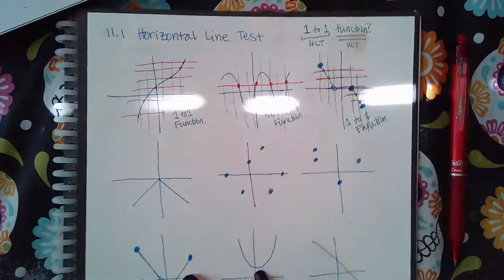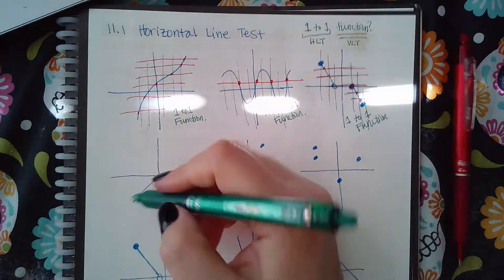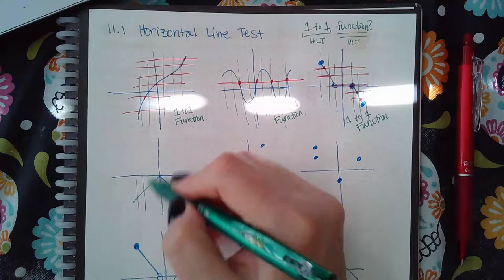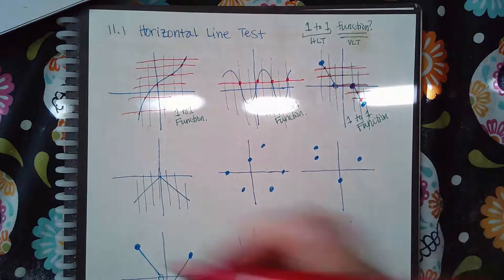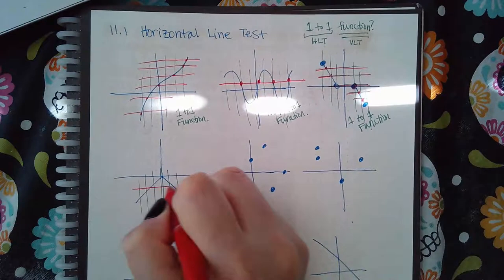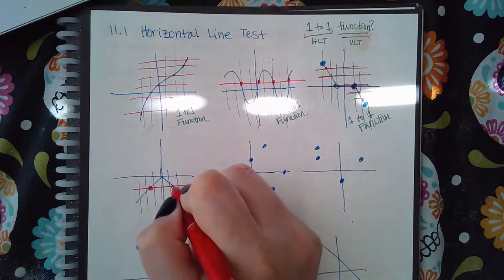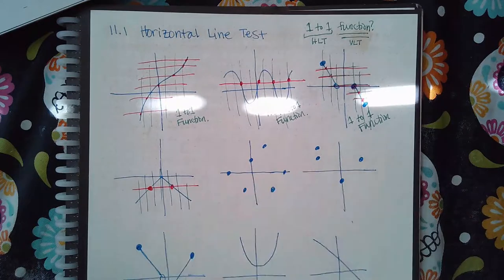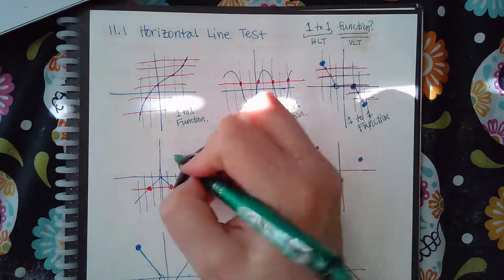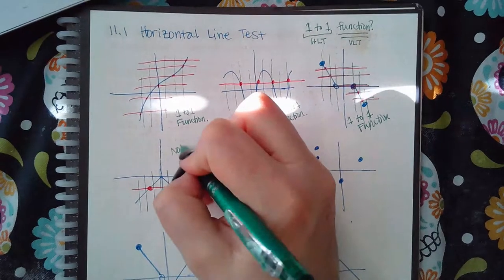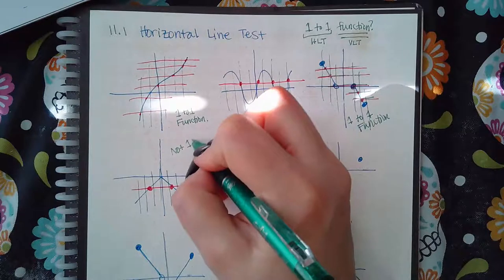Now over here, it passes the vertical line test, but it fails the horizontal line test. So it's a function, it's just not a one-to-one function.